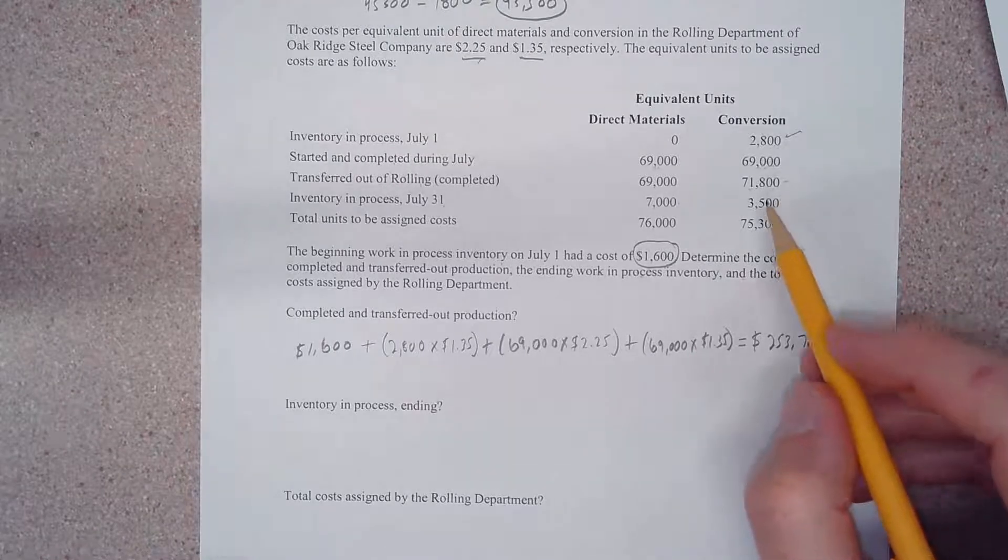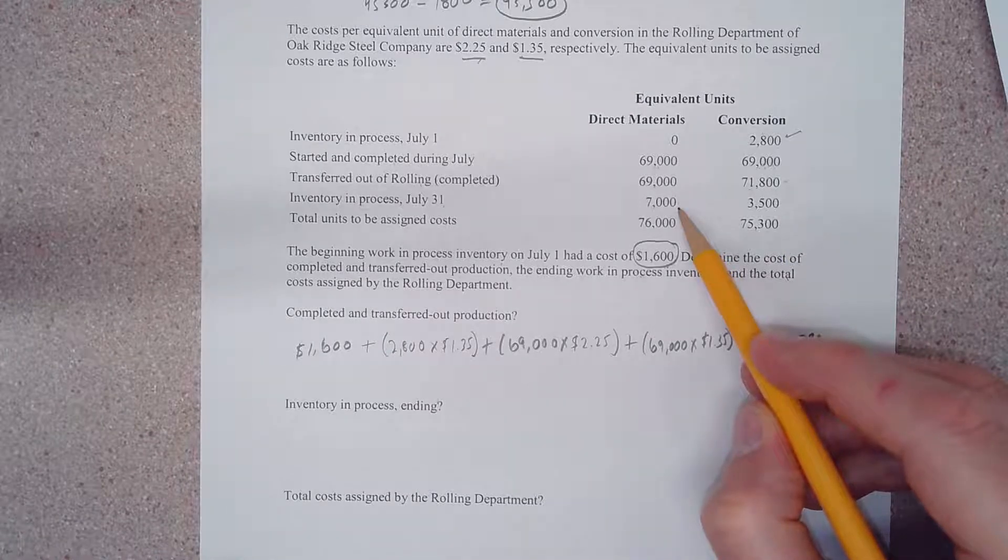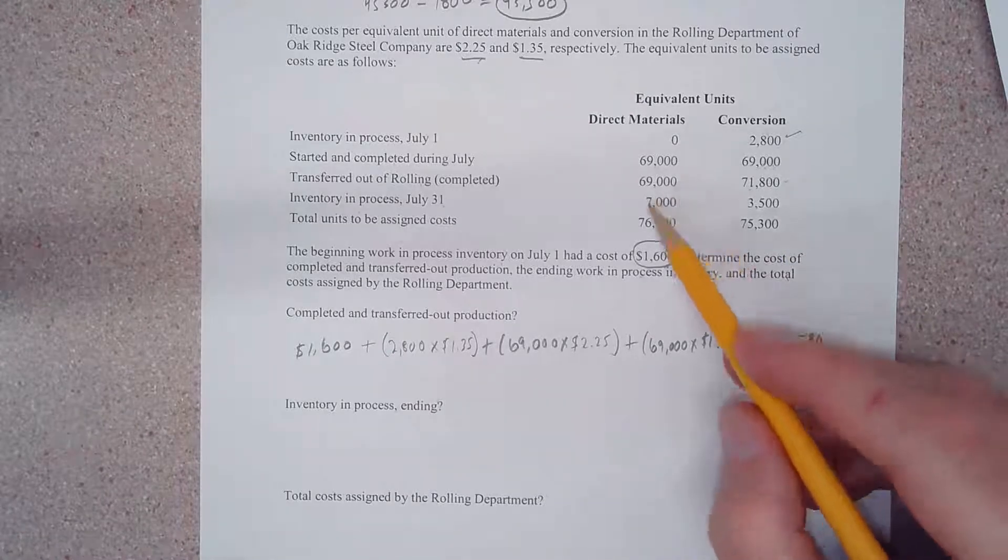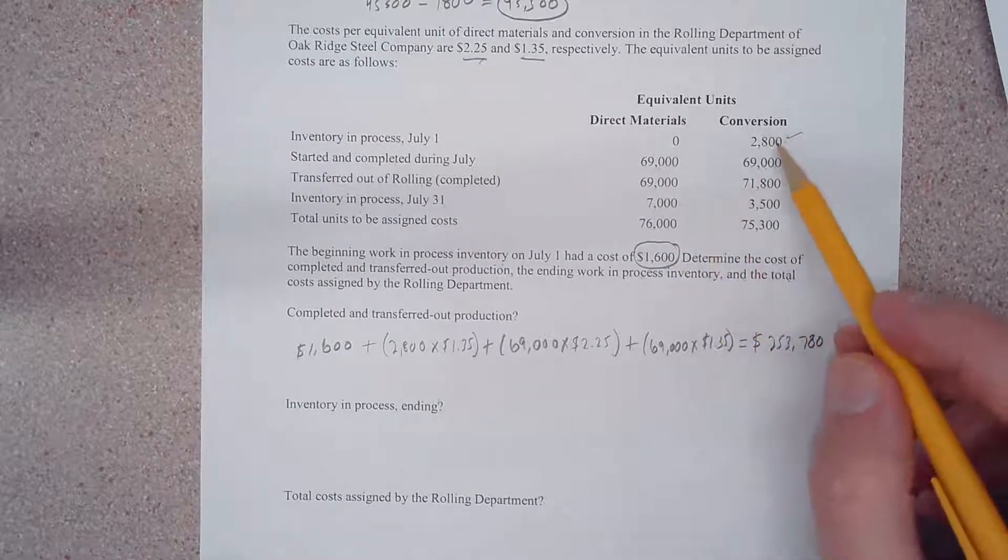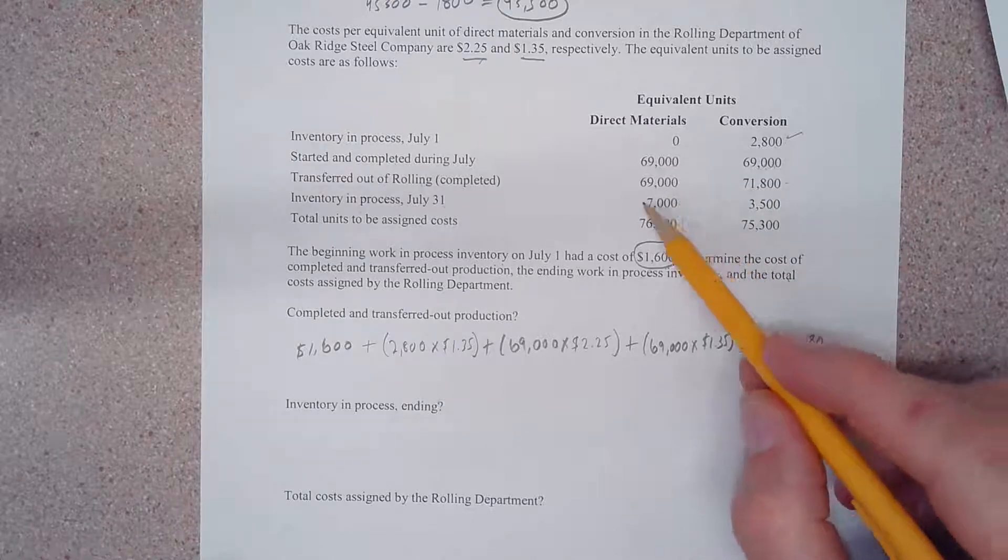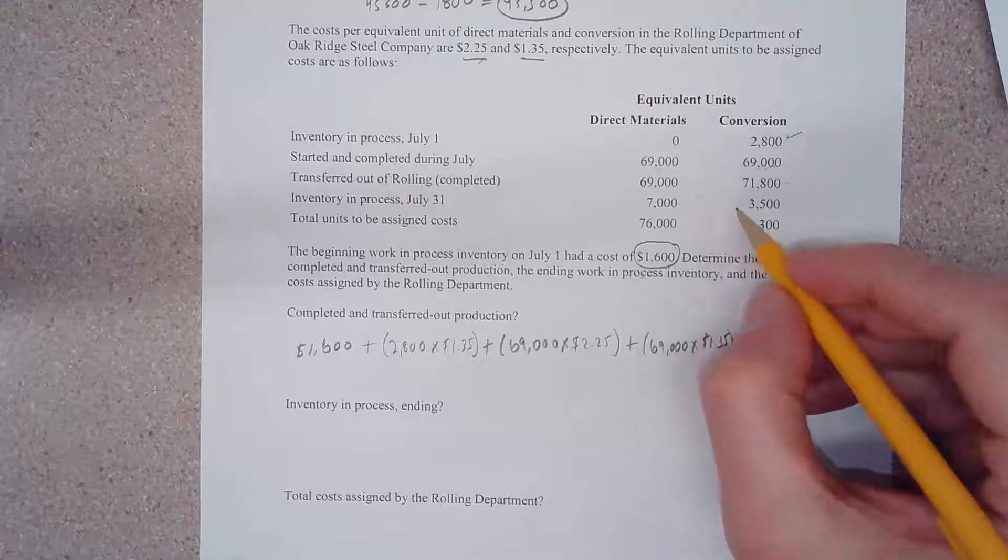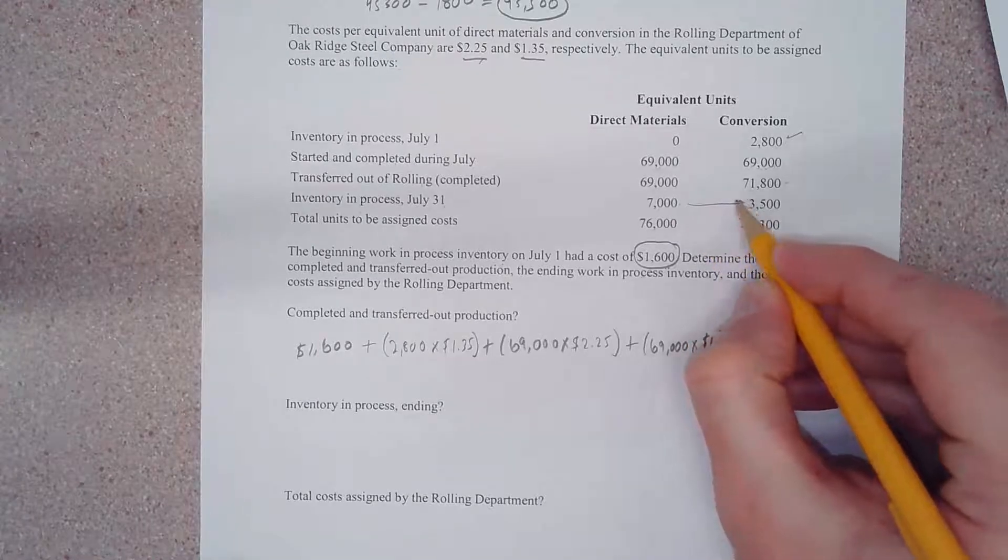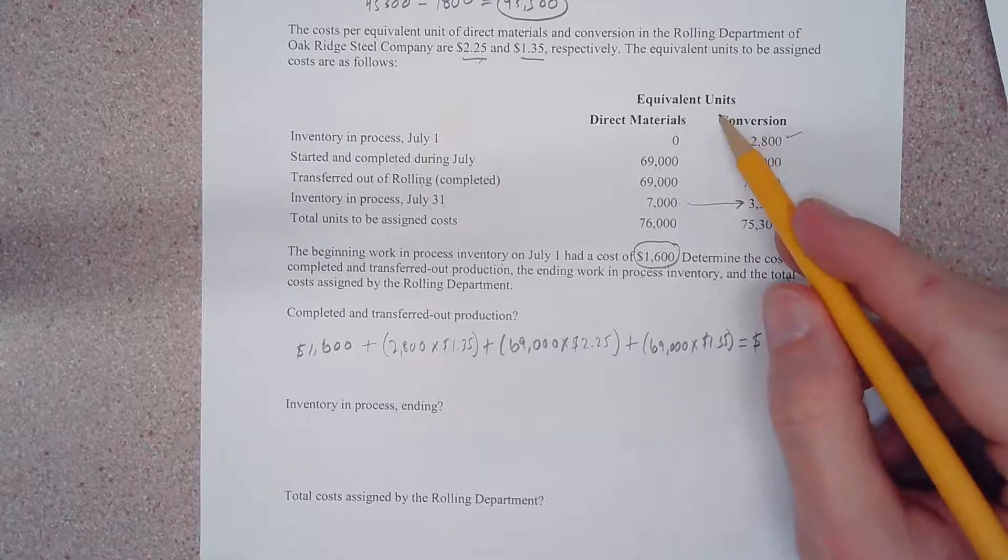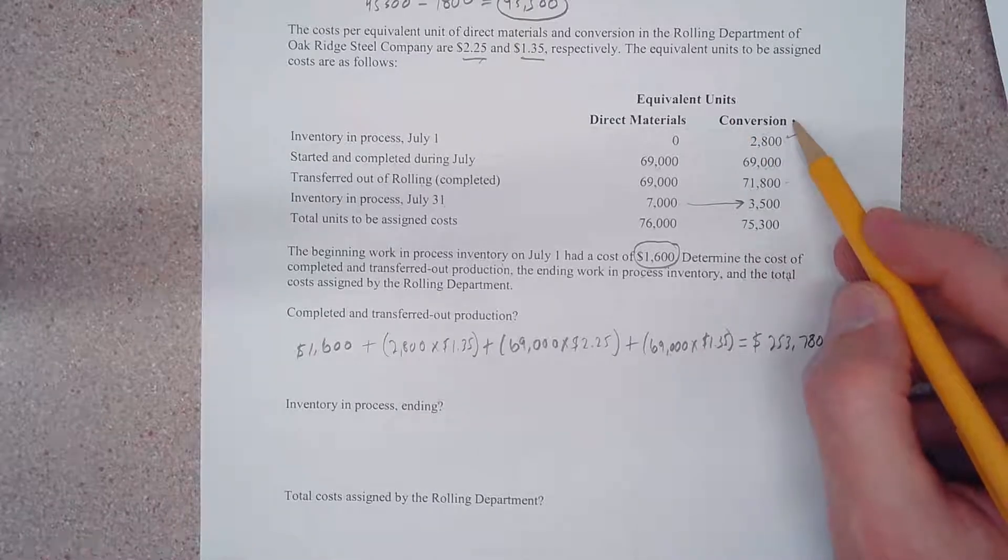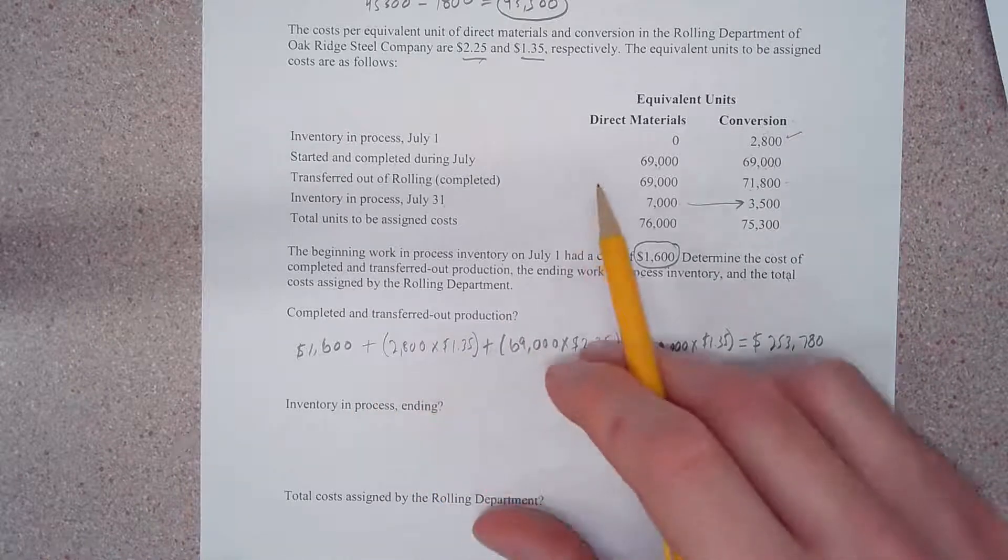This is telling us that we have 7,000 units, and all 7,000 of these units have had all the materials they're going to have added - they've already been added. The same 7,000 units here are 50% complete as to conversion cost, so we have 3,500 equivalent units as to conversion. So what is our ending in process inventory in dollars?